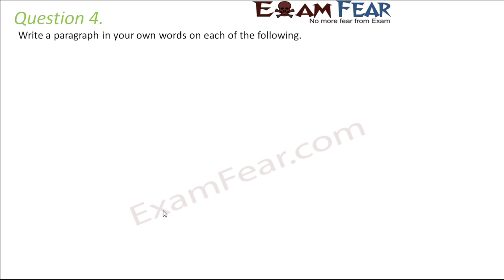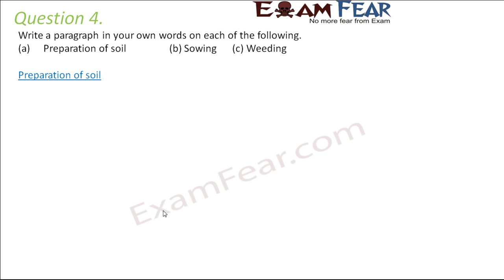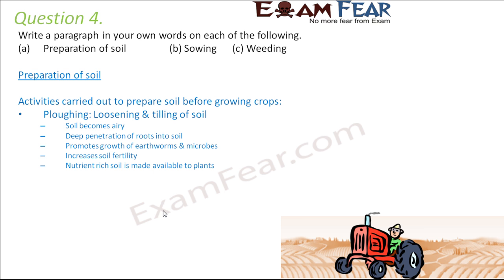Question number four: write a paragraph on preparation of soil, sowing, and weeding. Preparation of soil: soil needs to be prepared before crops are grown. The following activities are carried out. First, plowing — the soil is loosened so that it becomes more airy, allowing roots to penetrate deeper for better growth.